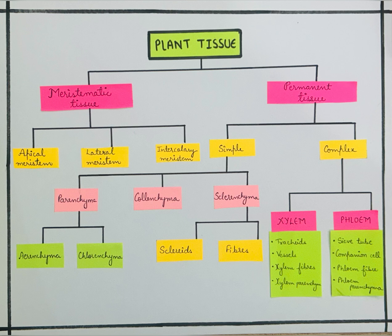Plant tissue is divided into two types: meristematic tissue and permanent tissue. Meristematic tissue is divided into three types: apical meristem, lateral meristem, and intercalary meristem. Permanent tissue is divided into two types: simple and complex.